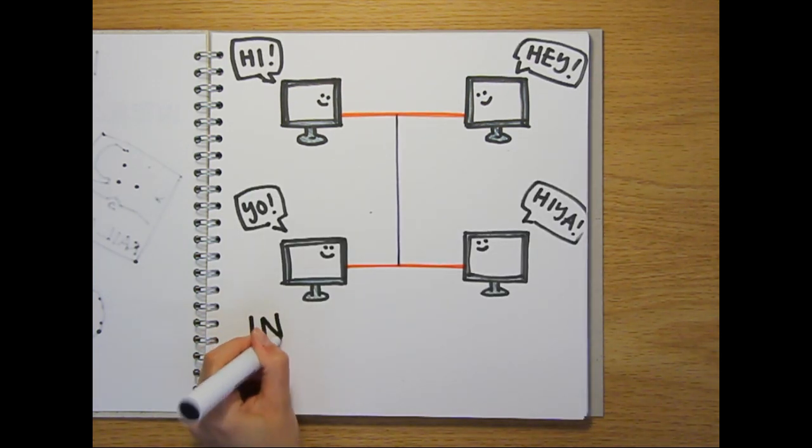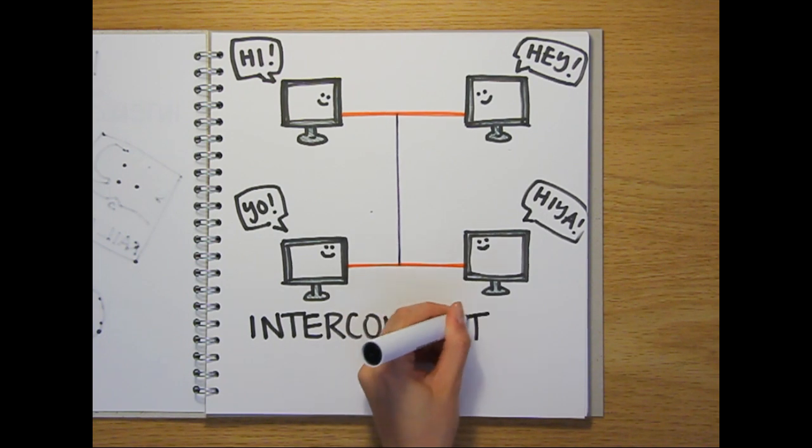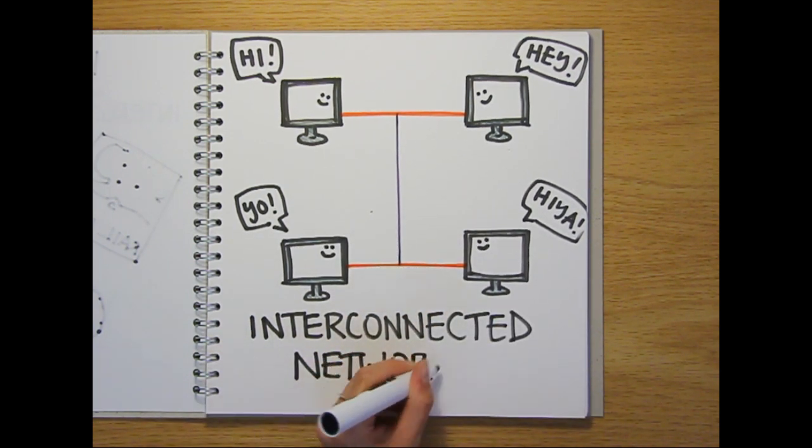By just doubling this setup, by having two pairs of computers connected, you've created an interconnected network, which is a very small version of the internet.